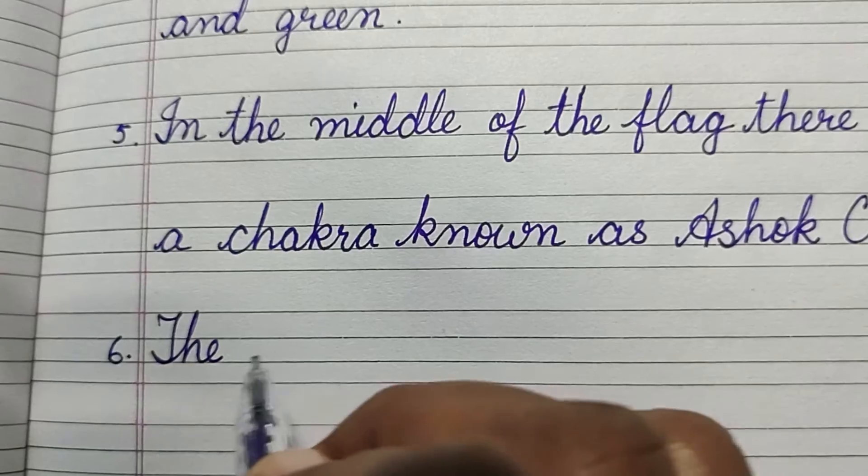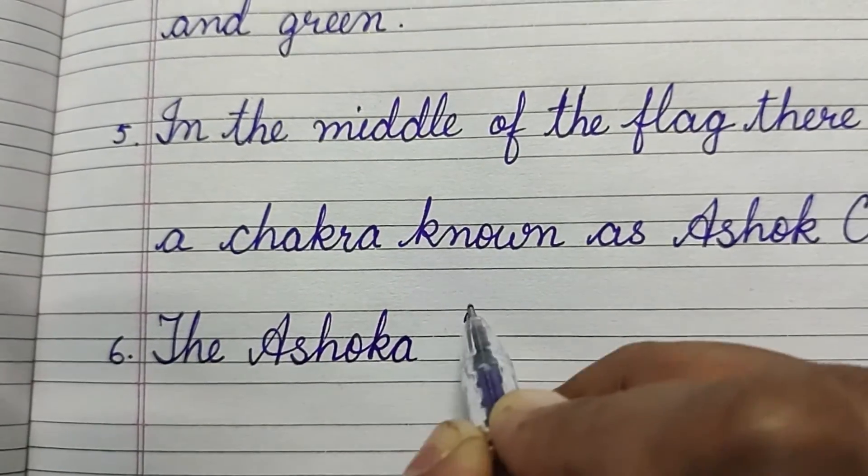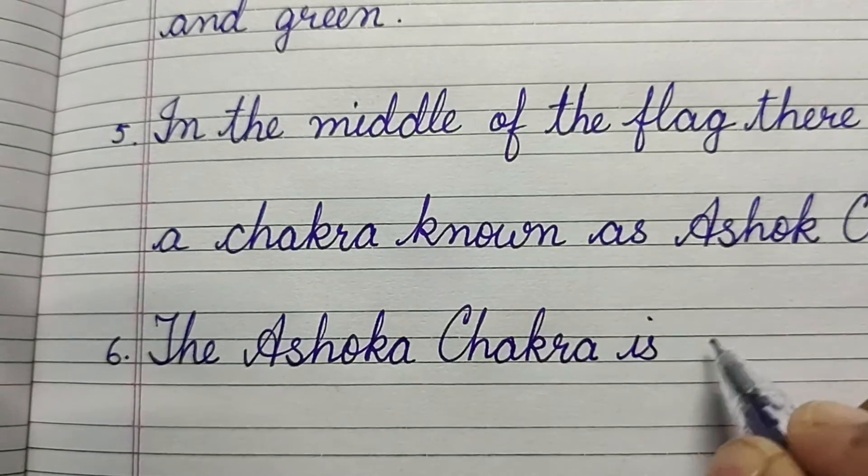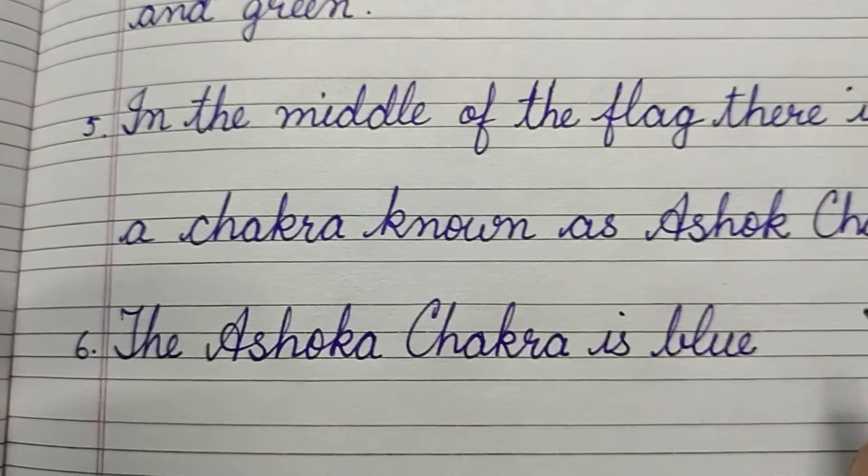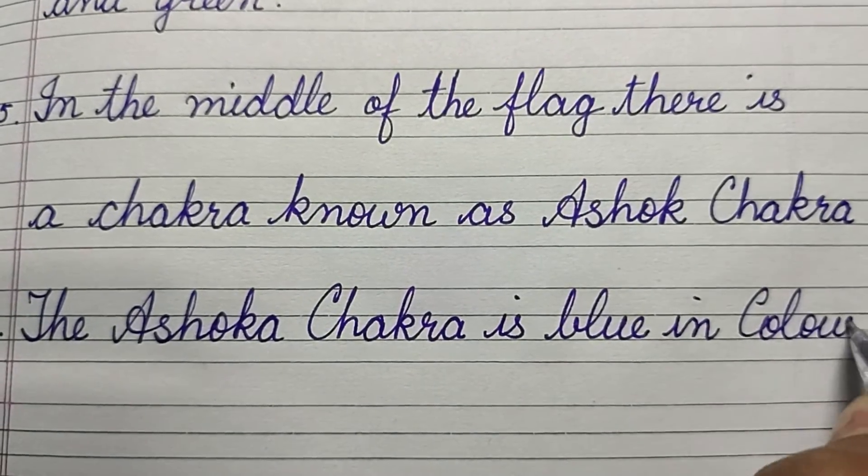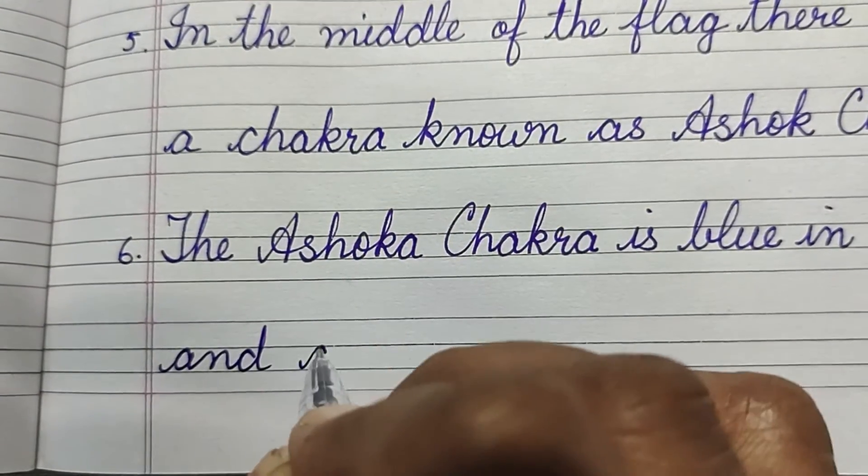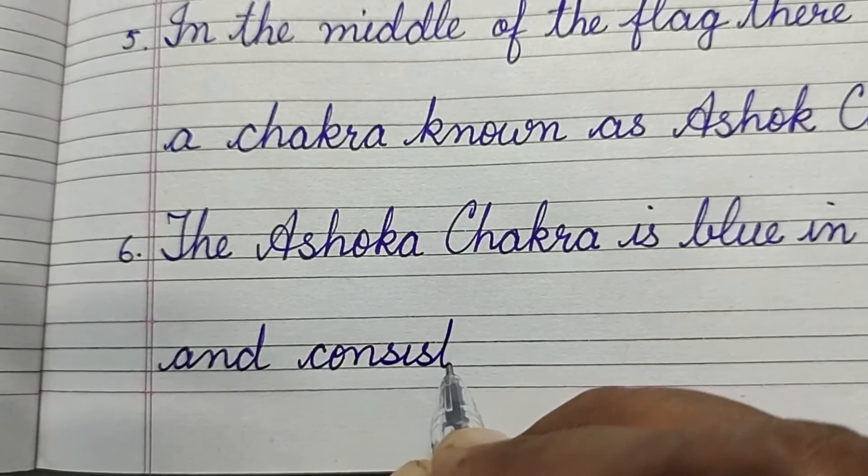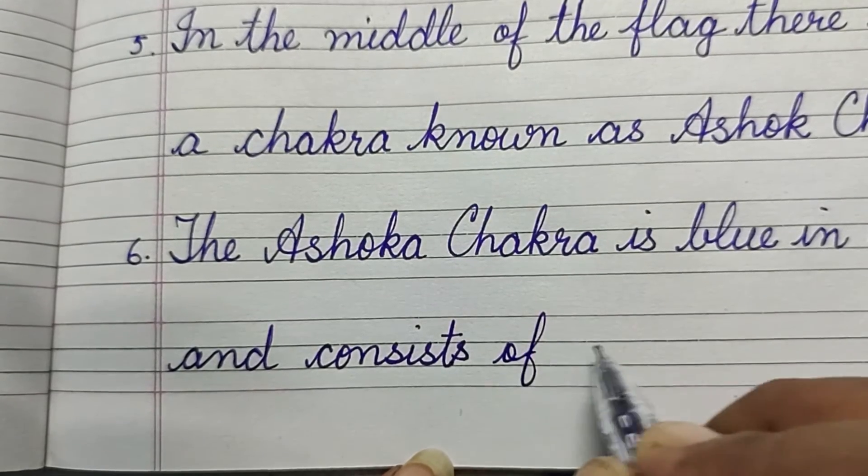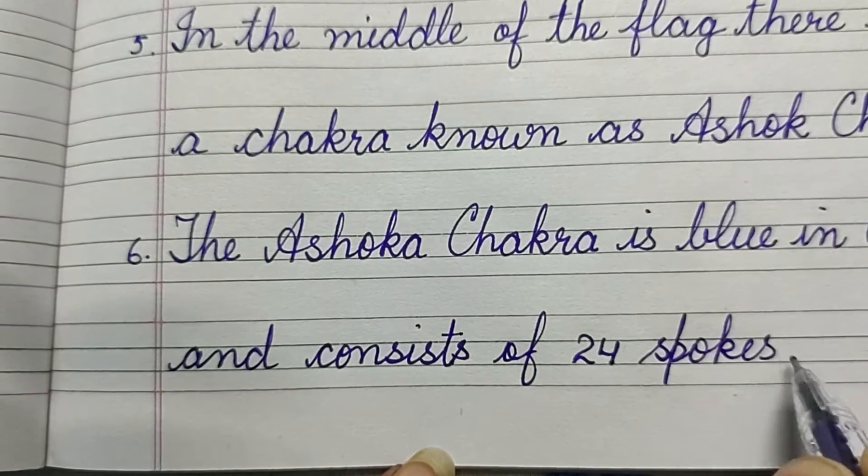Line number six: The Ashok Chakra is blue in color and consists of 24 spokes.